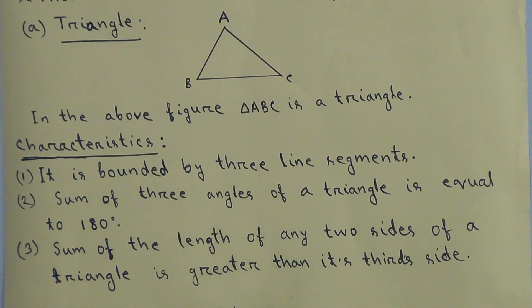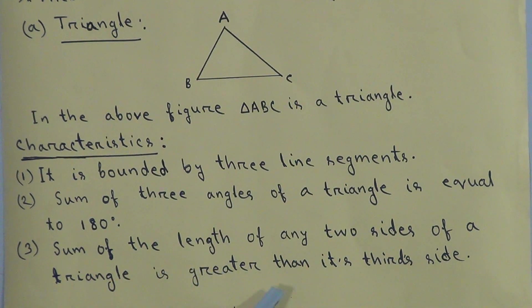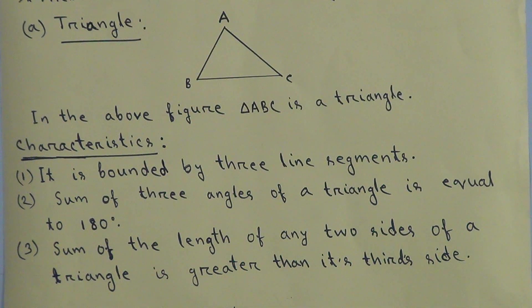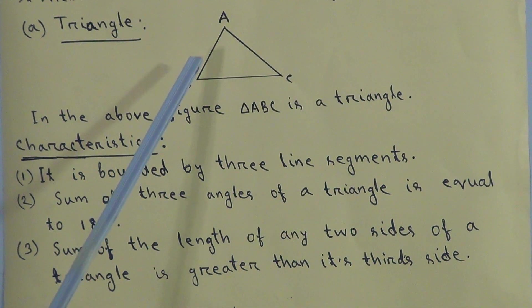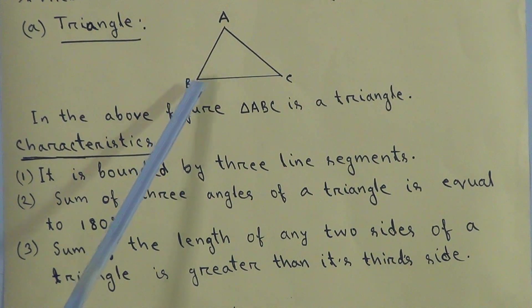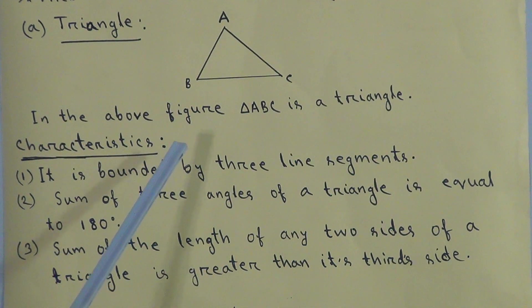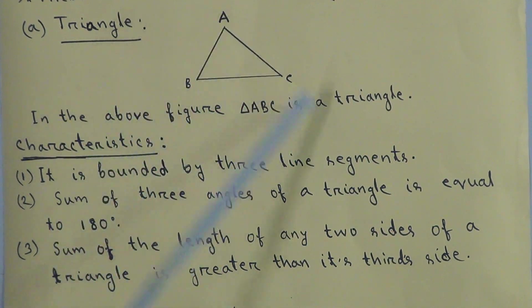The sum of the three angles equals 180 degrees. The third characteristic: the sum of the lengths of any two sides of a triangle is greater than its third side. In any type of triangle, if we add the length of AB and BC, it will be greater than AC. This is always true.